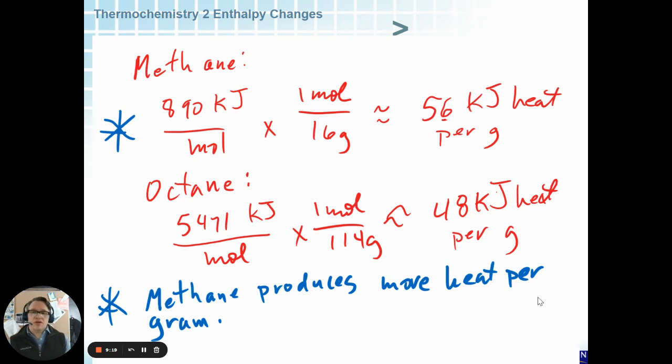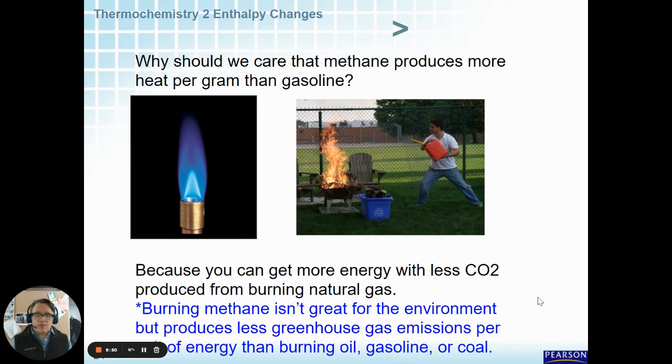Even though its heat of combustion is lower, because it weighs so much less, methane produces more heat per gram. You get more heat out of natural gas than you do heavier fossil fuels. This is why natural gas is often proclaimed to be the greenest of the fossil fuels because you need less of it to get the same amount of heat produced. You can get more energy with less CO2 produced as well from burning natural gas. That's the big thing, is that you get more heat per gram and less CO2 per gram with methane.